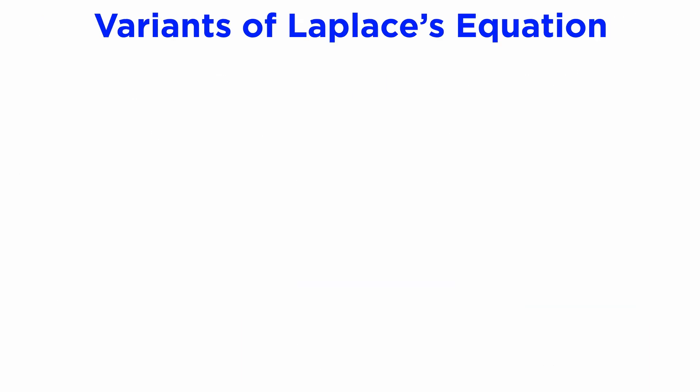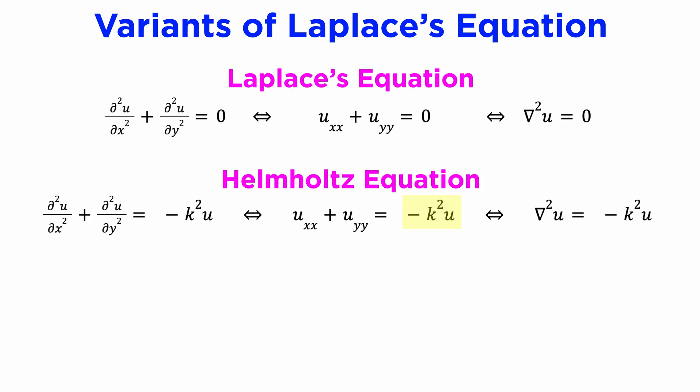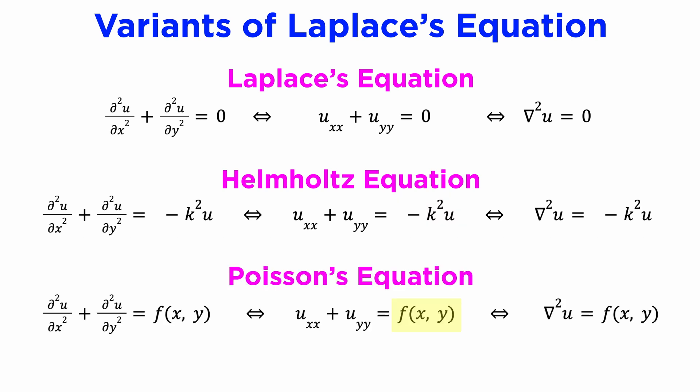Now we should very briefly mention some variants of Laplace's equation. If we take Laplace's equation and include a coefficient of u term, we get the Helmholtz equation, whereas if we take Laplace's equation and make it non-homogeneous with a general function f of xy on the right side, we get Poisson's equation.